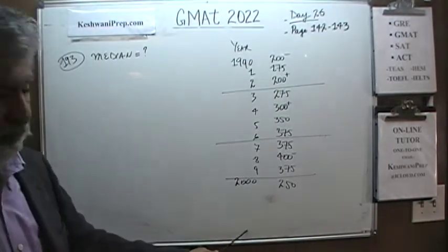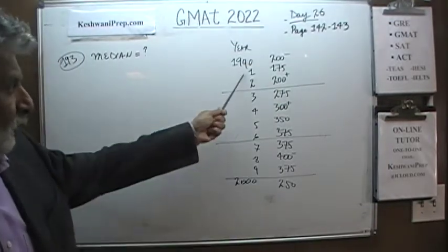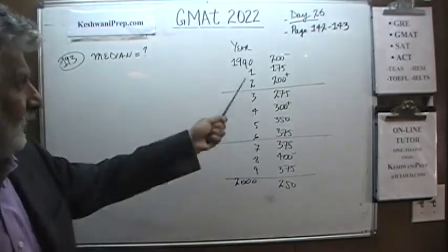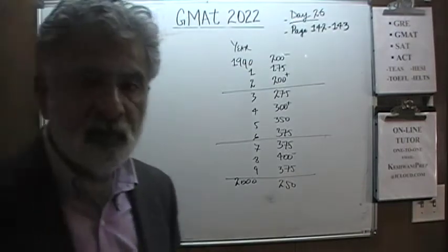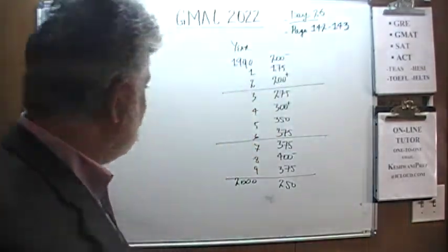There are 11 observations — 1 through 10 and then a 90 to 90. With 11 observations, the median is going to be the 6th one, with 5 on top and 5 on the bottom. So we just have to locate the 6th observation, whatever it is. Do you understand? Let's begin.